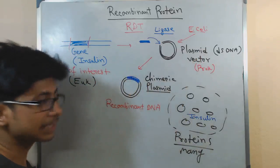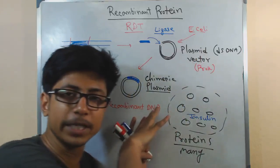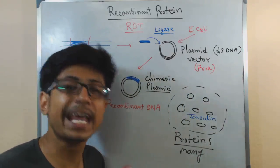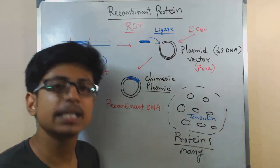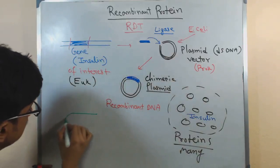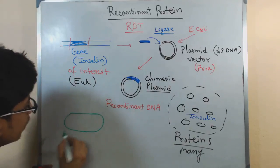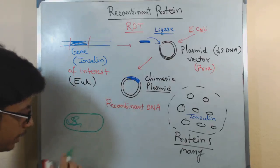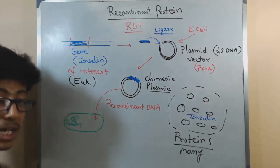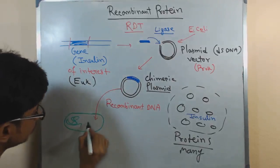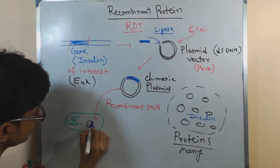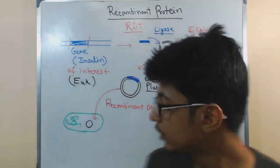Once we have this recombinant DNA, the third stage is to insert this recombinant DNA inside the cell which can carry it. For example, the bacterial cell, let's say the E. coli cell. So now we have this E. coli cell. E. coli cell has its own genome. What we do actually is we take this and insert this inside the E. coli genome.